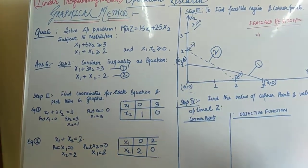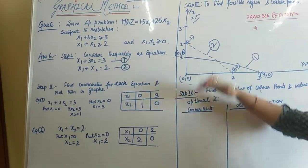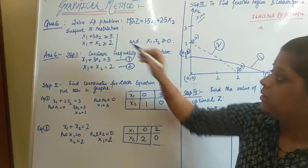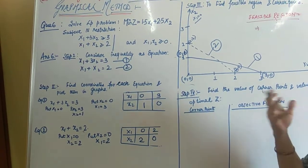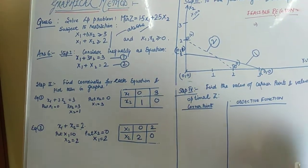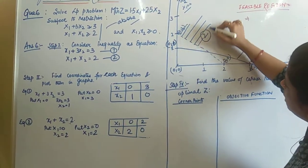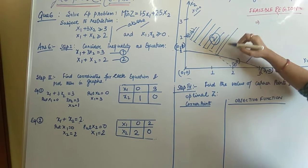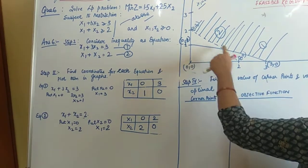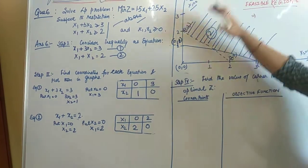In my previous videos, I told you if the constraint contains a less-than sign, we shade the below region in the first quadrant. Here, we have constraints with a greater-than sign, so we have to shade the above region — the region above the line in the first quadrant. The region above the first line and the region above the second line form the feasible area.